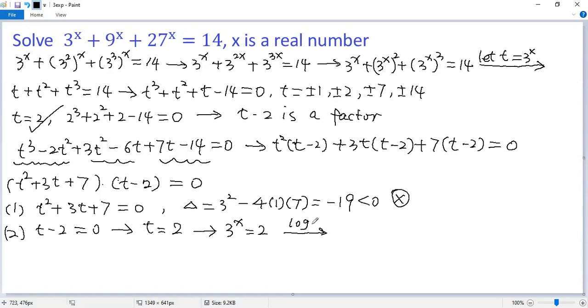Now both sides apply log with base 3. So we get log 3 to the power of x with base 3 equals log 2 with base 3. We can move x to the front of log, so we get x times log 3 with base 3 equals log 2 with base 3. We know log 3 with base 3 is 1, so we get x equals log 2 with base 3. That is the unique solution to the given equation.